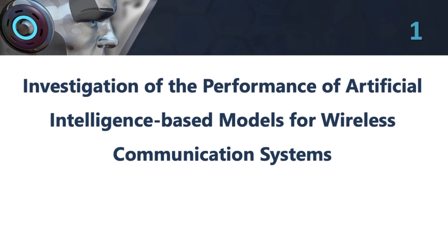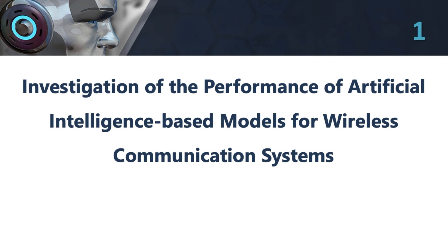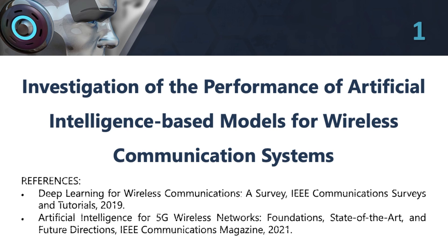So let's get started. 1. Investigation of the Performance of Artificial Intelligence-Based Models for Wireless Communication Systems. This topic involves exploring the use of AI models, such as neural networks, for optimizing the performance of wireless communication systems. The project could involve developing AI-based models that can learn from data and optimize parameters to improve the performance of the communication system. The models could be trained using simulation tools and tested in real-world scenarios to evaluate their performance.